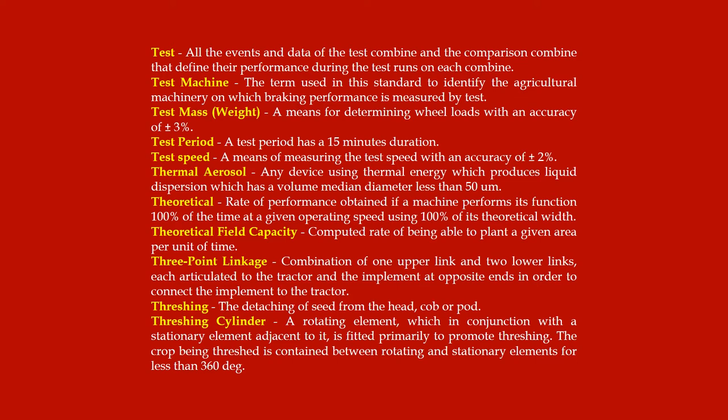Three-point linkage: a combination of one upper link and two lower links, each articulated to the tractor and the implement at opposite ends, in order to connect the implement to the tractor. Threshing: the detaching of seed from the head, cob, or pod. Threshing cylinder: a rotating element which, in conjunction with a stationary element adjacent to it, is fitted primarily to promote threshing; the crop being threshed is contained between rotating and stationary elements for less than 360 degrees.